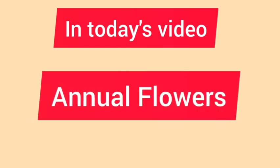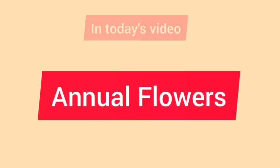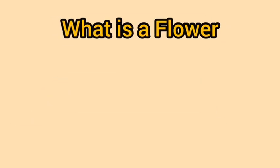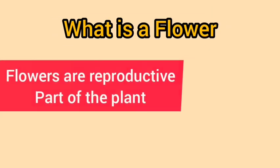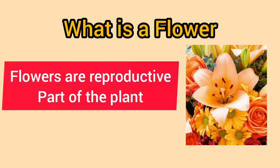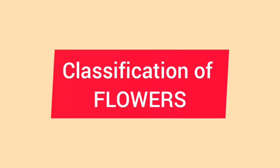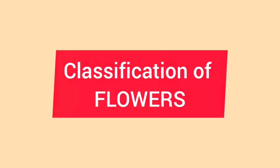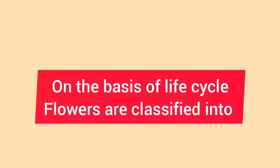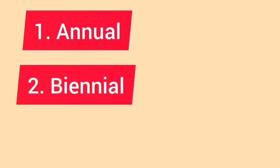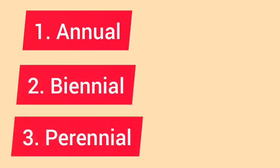In today's video, we'll be dealing with annual flowers. First, we should know what is a flower. Flowers are the reproductive part of the plant. Let's see the classification of flowers on the basis of life cycle. It is classified into three: annual, biennial, and perennial.